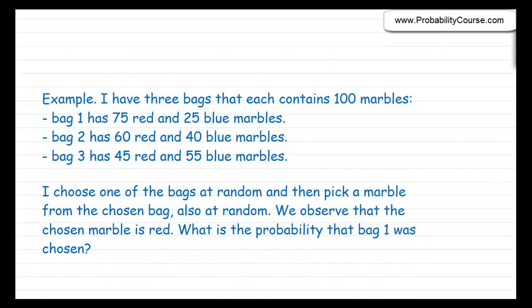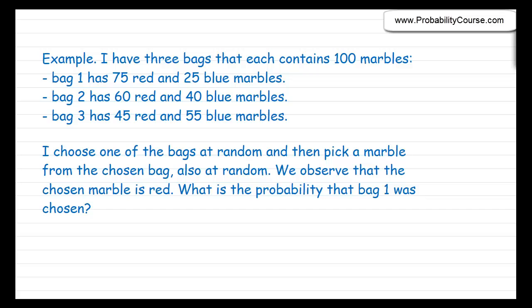Here is an example. I have three bags that each contains 100 marbles. Bag 1 has 75 red and 25 blue marbles. Bag 2 has 60 red and 40 blue marbles. Bag 3 has 45 red and 55 blue marbles. I choose one of the bags at random and then pick a marble from the chosen bag also at random. I observe that the chosen marble is red. The question is, what is the probability that bag 1 was chosen?